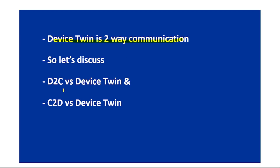We previously discussed D2C and C2D. You may wonder: we can use D2C to send messages from device to cloud, but we can also use device twin for the same. Similarly, we can use C2D to send messages from cloud to device, but device twin can serve that purpose too. So how should we select the correct messaging method based on our requirement?